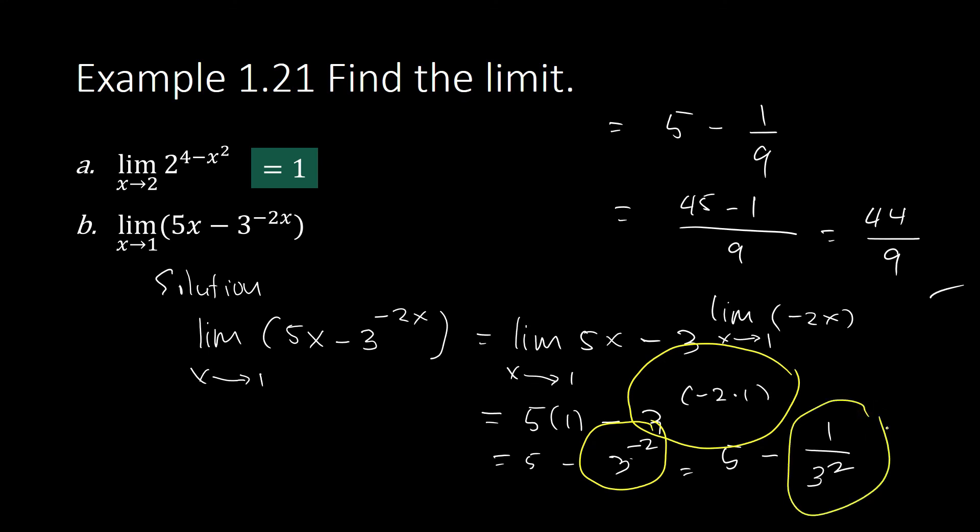1 over 3 squared. And 3 squared is equal to 9. So it becomes 5 minus 1 over 9. And combining that together, we have 44 over 9.